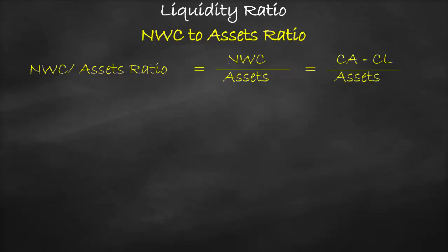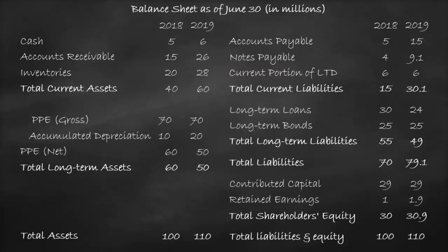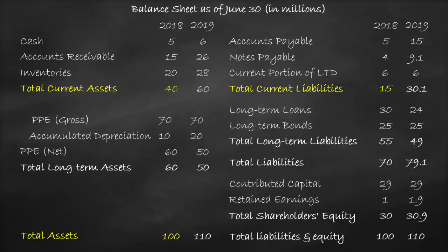We get the current assets, current liabilities, and total assets from the balance sheet. So let's calculate the net working capital to total assets ratio for the year 2018. Current assets of $40 million minus current liabilities of $15 million, all divided by total assets of $100 million, which is equal to 25%.